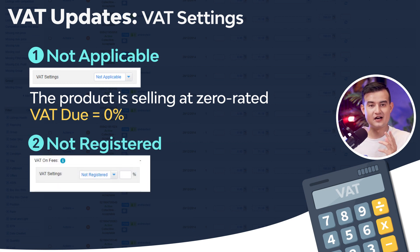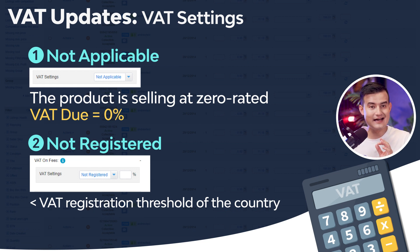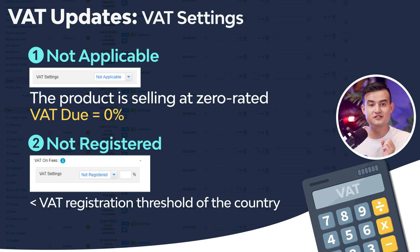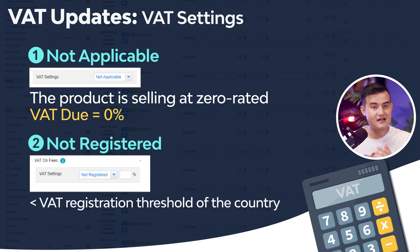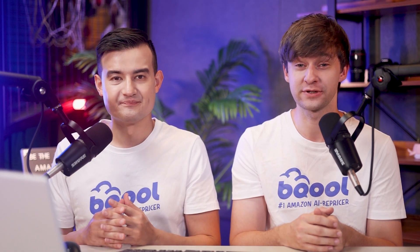The second setting is not registered. If the business turnover is less than the VAT registration threshold of the country, you can select not registered in the VAT settings. Take the UK for example — it is not necessary for sellers to register for VAT if their turnover is less than £85,000. Customers need to input the VAT rate because even though there is no need to pay VAT on their sales price, they still need to pay VAT on Amazon-relevant fees such as the Amazon referral fee, closing fees, and FBA fulfillment fees. The system supports input values up to two decimal places, and when no value is inputted, the value is set at zero.